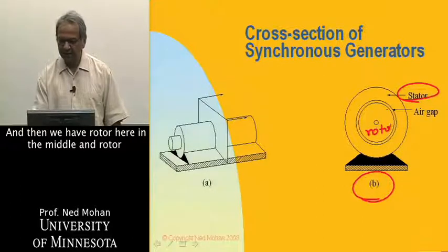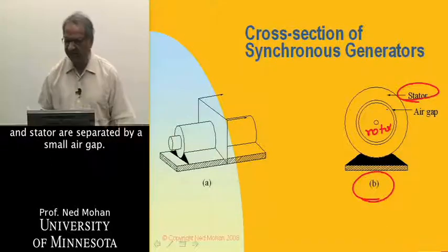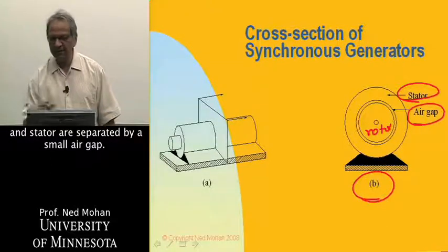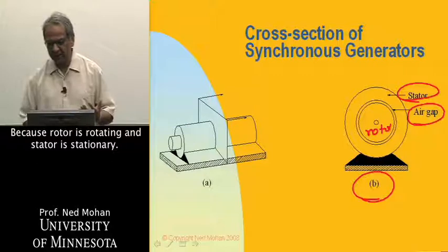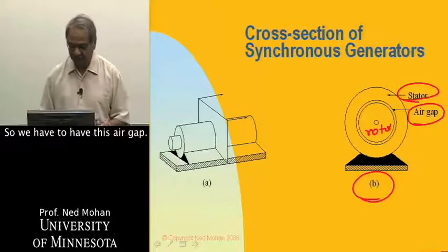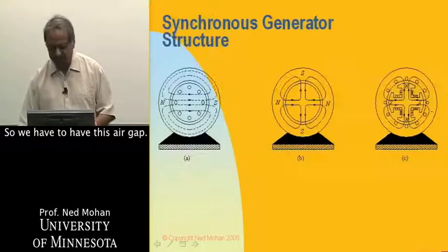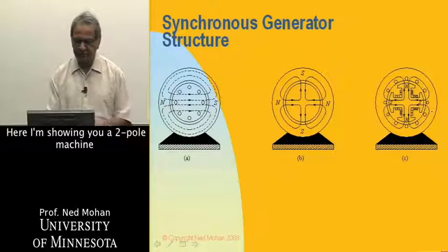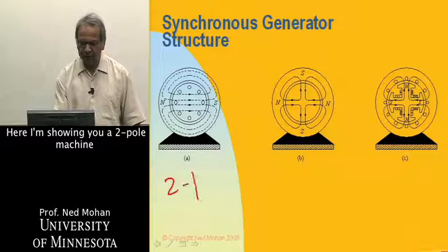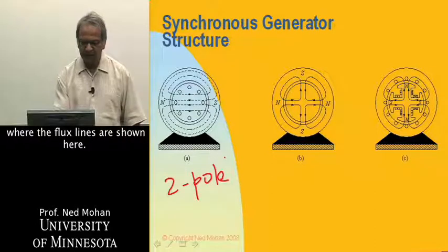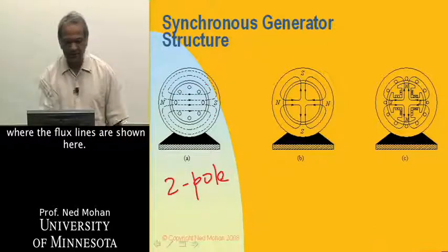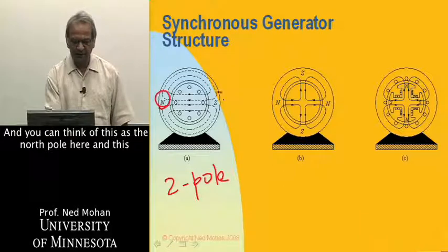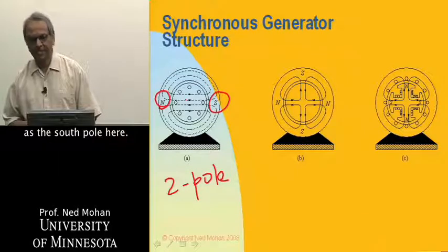And then we have rotor here in the middle, and rotor and stator are separated by a small air gap, because rotor is rotating, and stator is stationary. So we have to have this air gap. And there are various types of structures. Here, I'm showing a two-pole machine, where the flux lines are as shown here. You can think of this as a north pole, and this as a south pole here.